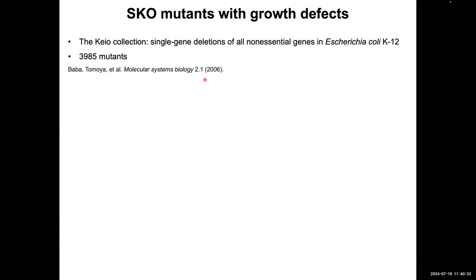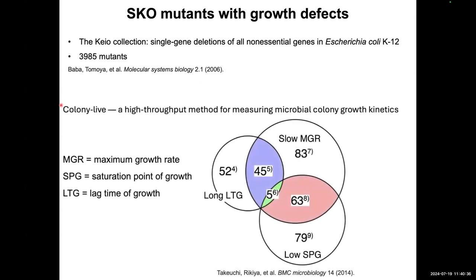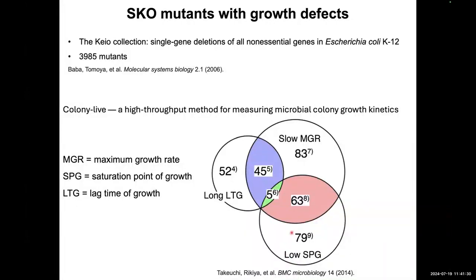This group developed the KO collection in 2006 and also developed a high-throughput method to measure the growth parameters of all 4,000 mutant colonies. They measured three different parameters: maximum growth rate (MGR), the saturation point the colony grows to (SVG), and the lifetime of growth (LTG) — the time it takes for the colony to enter exponential growth. They found that a subset of mutants had lower values compared to wild type.